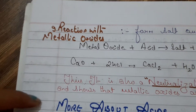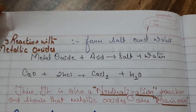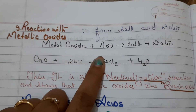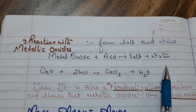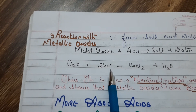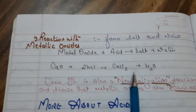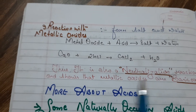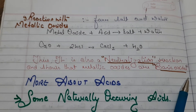Reaction with metallic oxide: when metallic oxides react with acid they form salt and water. For example, calcium oxide plus HCl produces calcium chloride plus water. This is also a neutralization reaction and shows that metallic oxides are basic oxides.